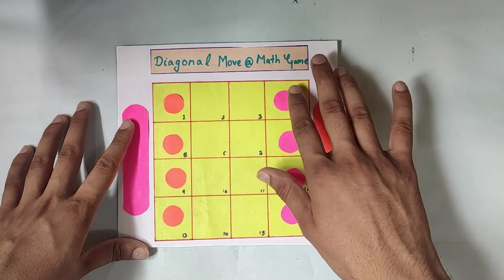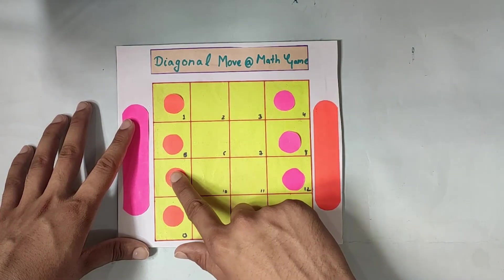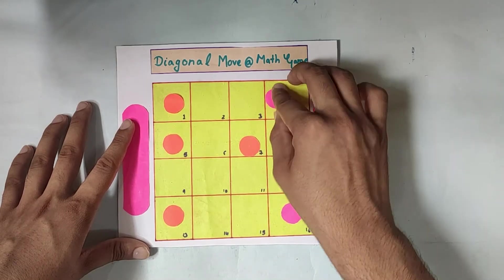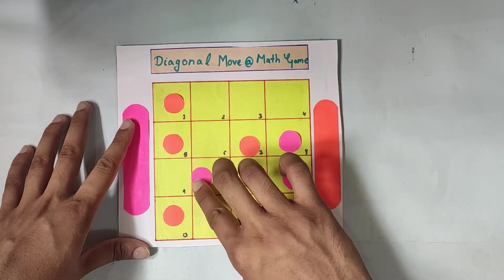One more rule is that you cannot jump over another circle. For example, if the circle is here, you cannot move this pink circle to here. This is not possible.